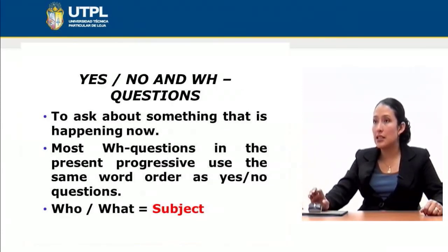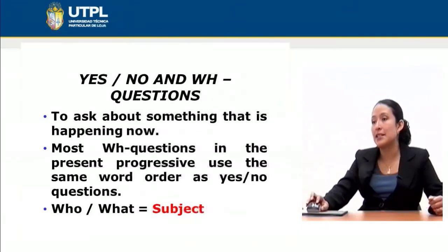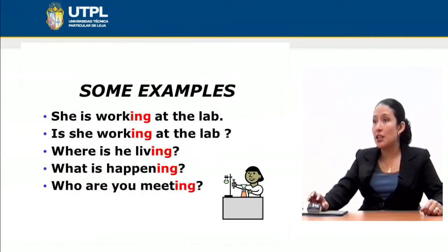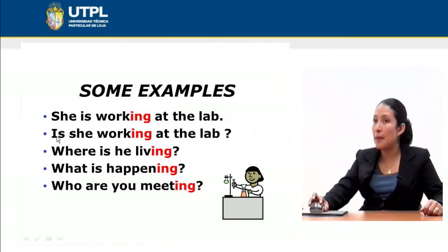Questions in this tense can also be formed. They are used to ask about something that is happening now. Most WH questions in the present progressive tense use the same word order as yes/no questions — the ones you know — and who and what are followed directly by the subject. For example: She is working at the lab. If you want to transform this into a question, notice the following rule: at the beginning of the question you need your verb — is, am, or are.